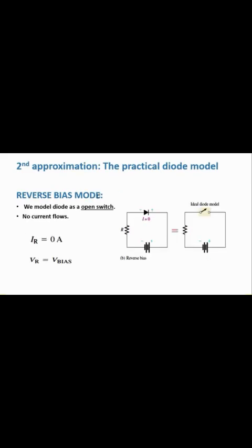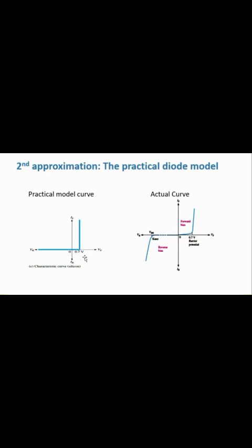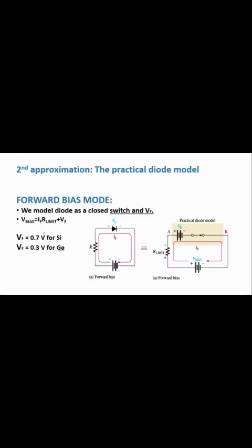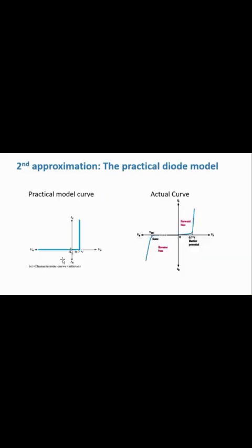The KVL equation for the practical diode model forward bias is: V_bias = I_f × R_L + Vf. The reverse bias mode in the practical diode model is the same as in the ideal model — the switch is open, all voltage appears across the terminals, and current is zero. The practical model graph starts from 0.7 V for silicon, making it closer to the actual curve than the ideal model.